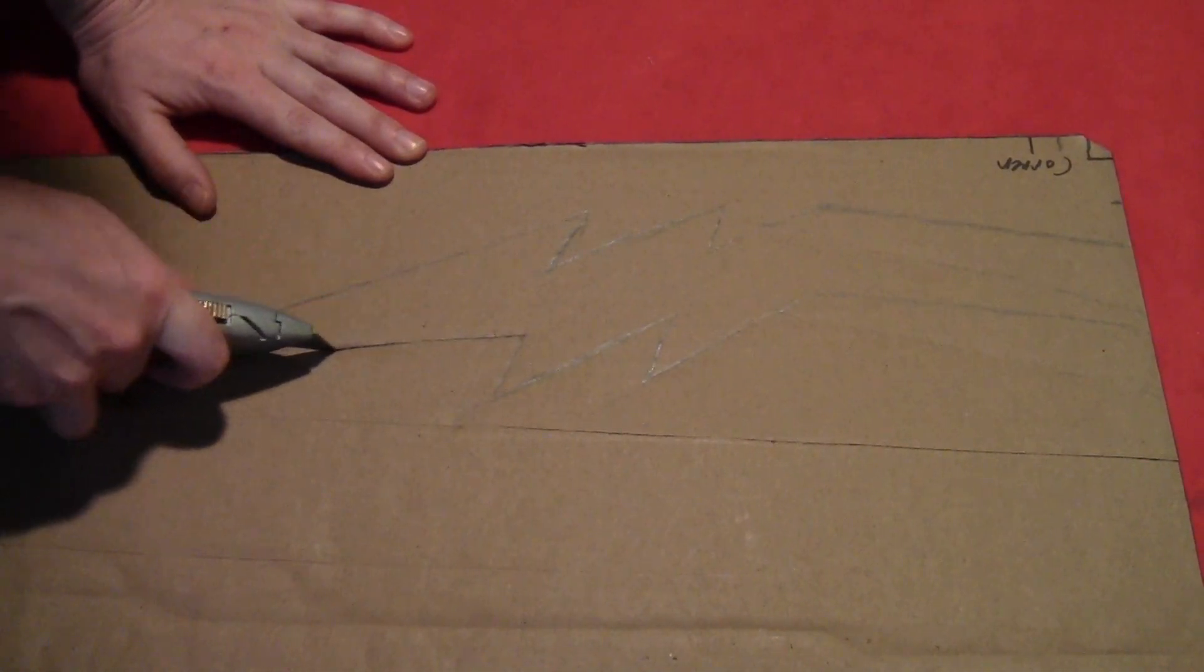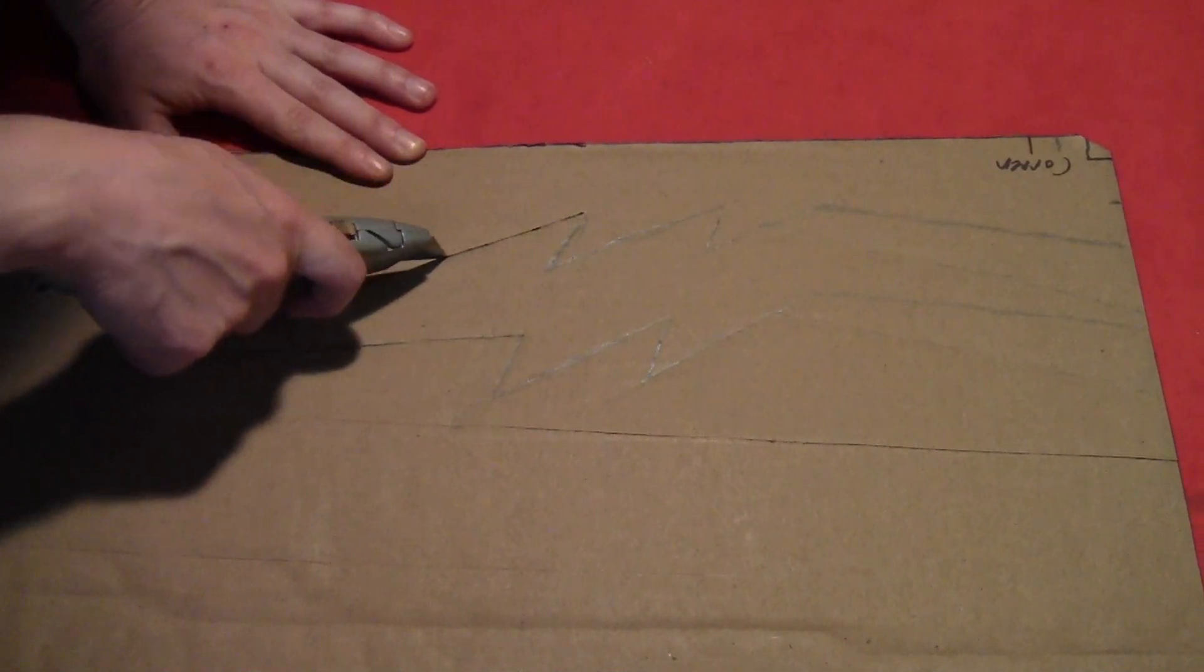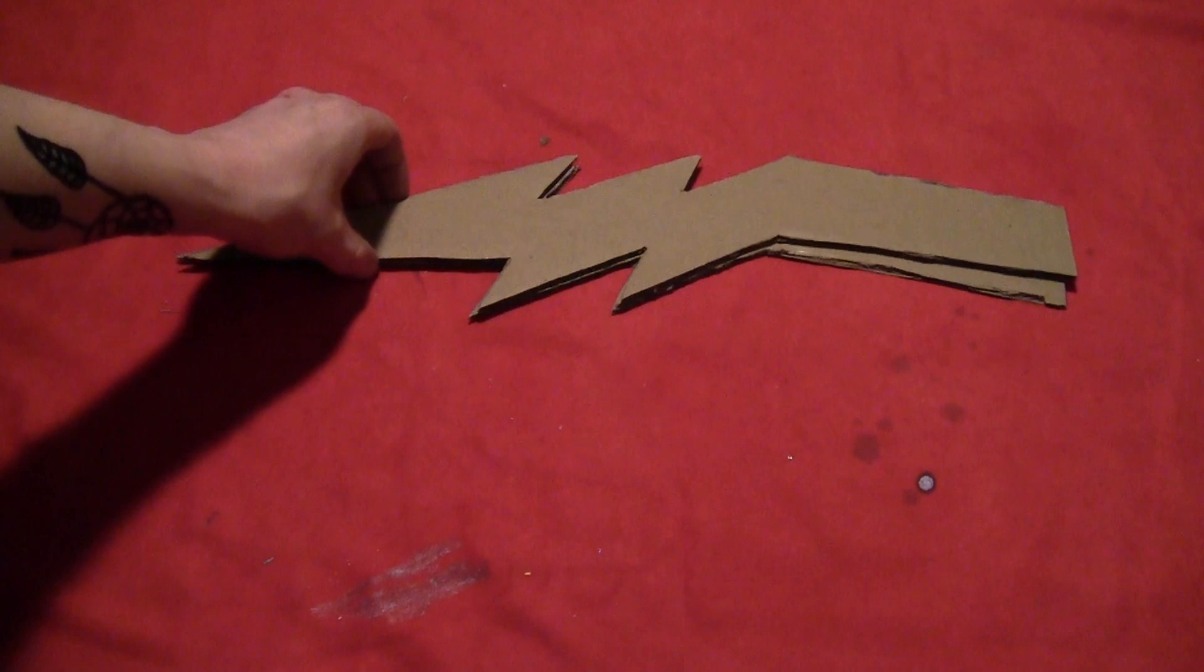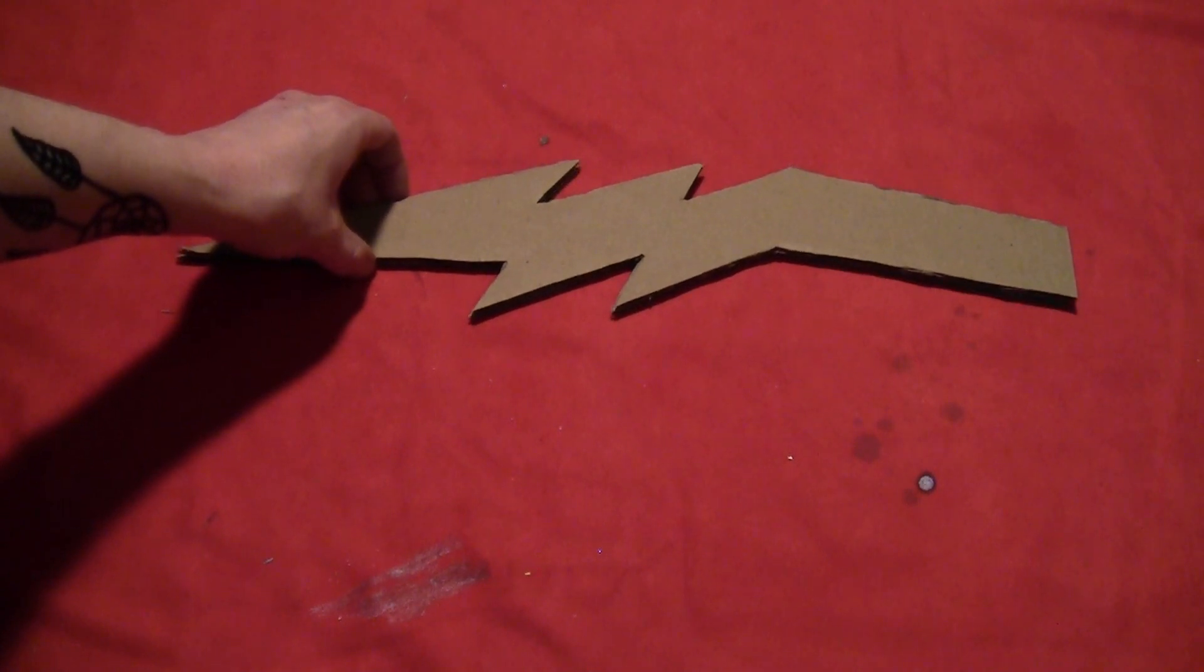Then just cut it out with a pair of scissors or a utility knife. You'll want to cut two of those. You'll glue one right on top of the other, gives it a little more stability.